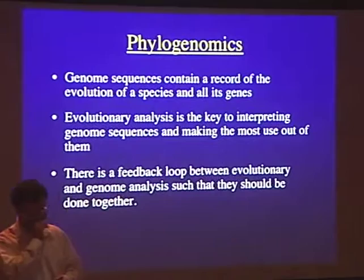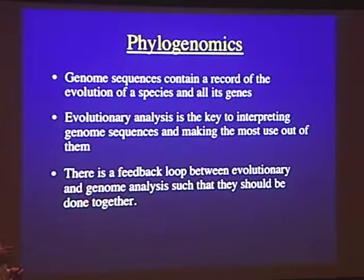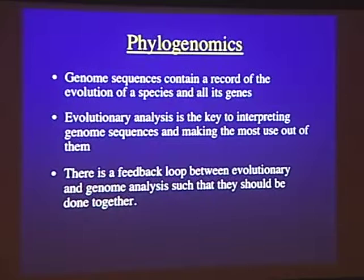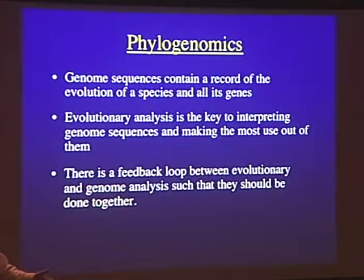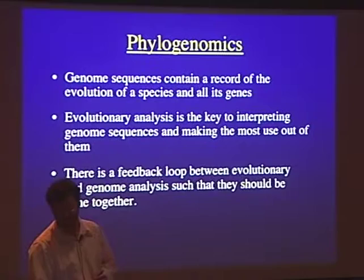So distinguishing between convergence and homology requires understanding the history, not just the similarities and differences. I invented my own omics word — I came up with the term phylogenomics. What I really mean by phylogenomics is an integrated approach where you combine evolutionary reconstructions and genome analysis to study whatever you're interested in. This integrated approach is necessary because there's a feedback loop between evolutionary reconstructions and genome analysis. For example, if you're studying the evolution of a gene family, it helps to first have a genome sequence, scan it for homologs, then use evolutionary analysis to divide the family into subfamilies or groups of orthologs, go back to the genome to look at their locations, and do another evolutionary analysis. They have to be done together.